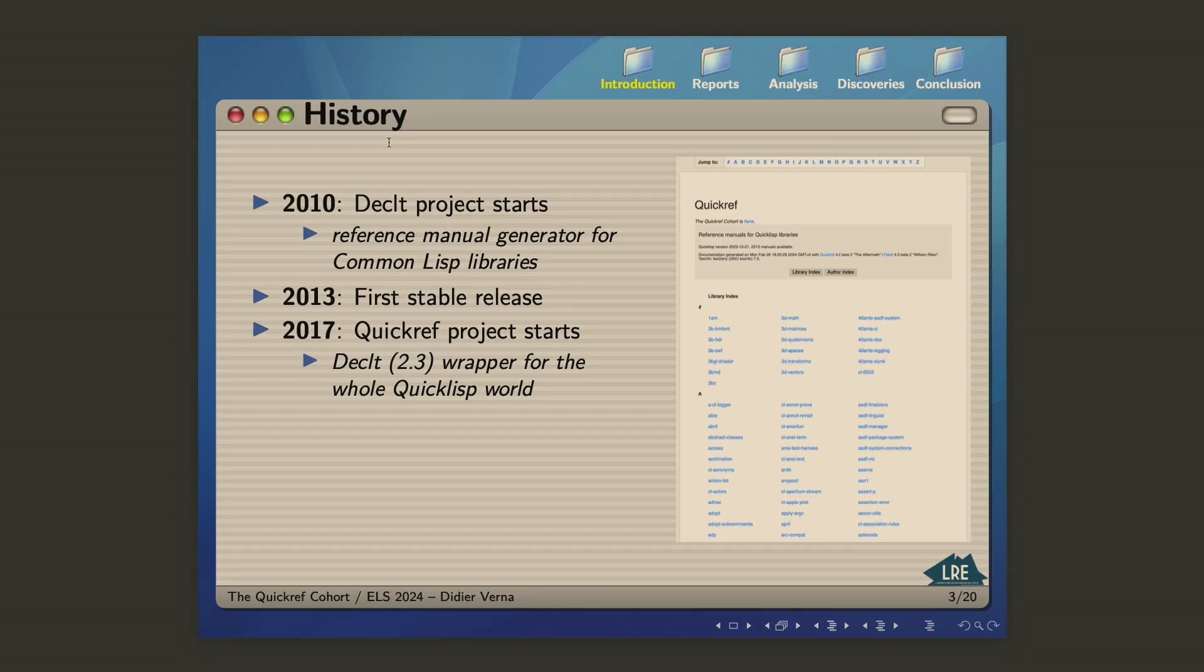QuickRef started in 2017. At the time, DECLET was at version 2.3. Actually, QuickRef is essentially a wrapper on top of DECLET, which means that it calls the DECLET library on every single ASDF system there is in QuickLisp, and then it aggregates the results and generates a website, which probably many of you have seen already. And so today, the QuickRef website automatically generates reference manuals for more than 2,000 libraries. Every time a new version of QuickLisp is released, the website is automatically regenerated.